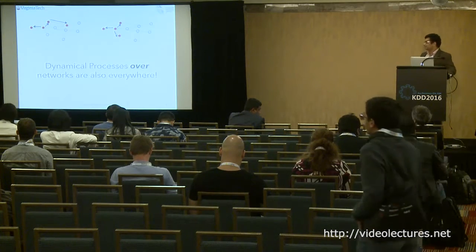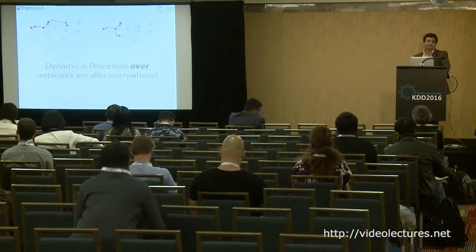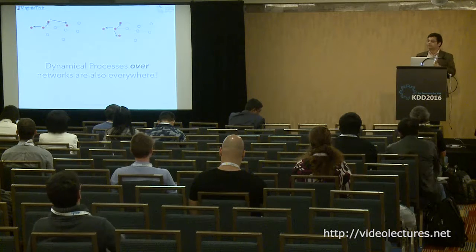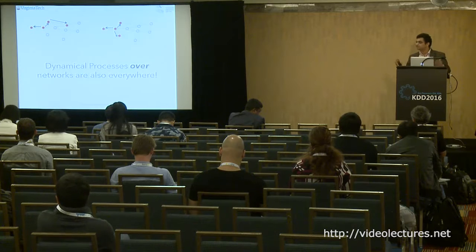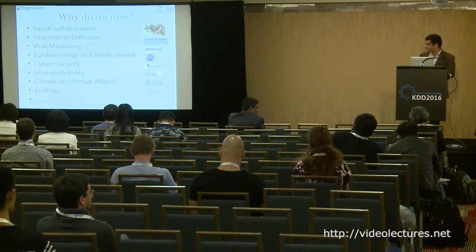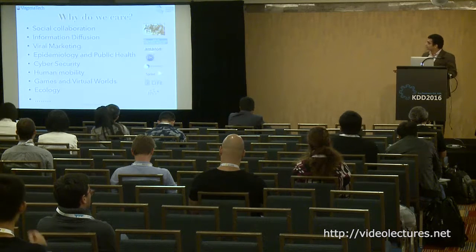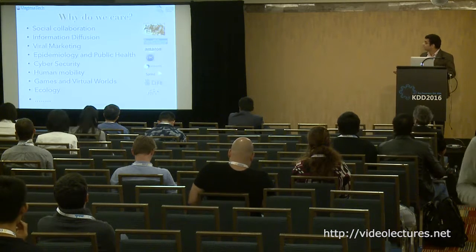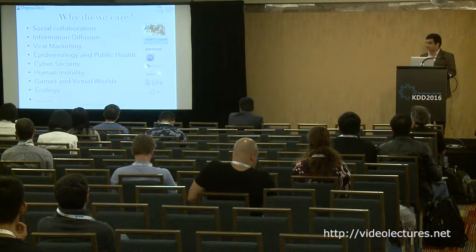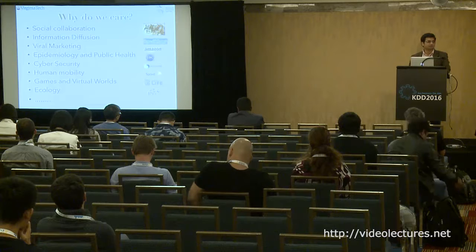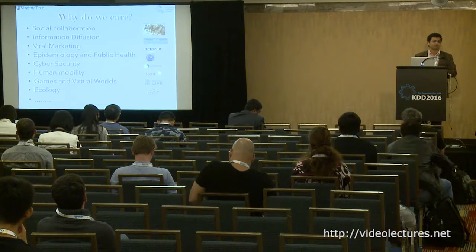The main point of this tutorial is that dynamical processes over networks are also everywhere. Dynamical processes are things that spread over a graph — a disease, contagion, influence, information. Something happening on top of the graph. These processes are important for social collaboration, information diffusion, viral marketing, epidemiology, cyber security, and so on. In all these fundamental applications, dynamical processes over graphs is a very useful abstraction.